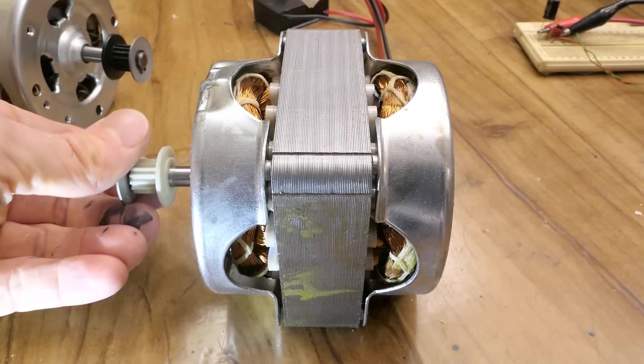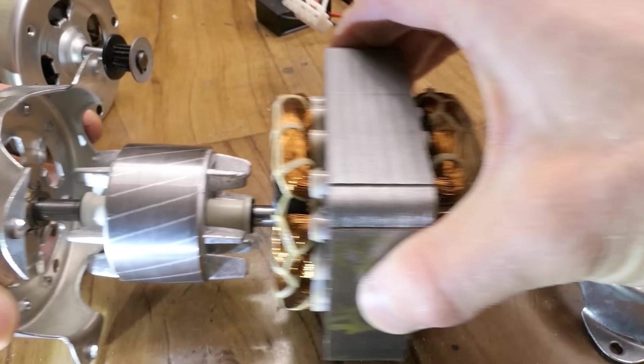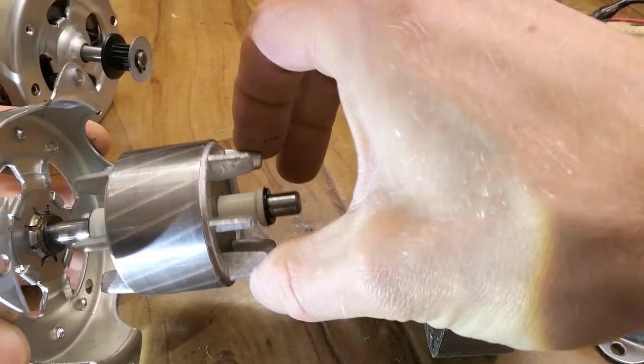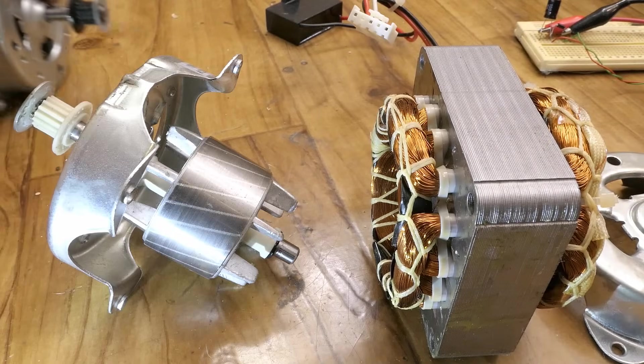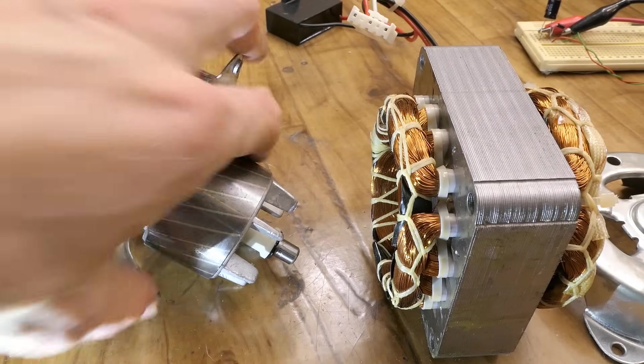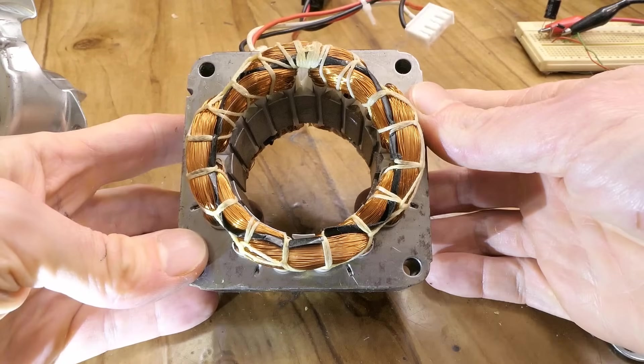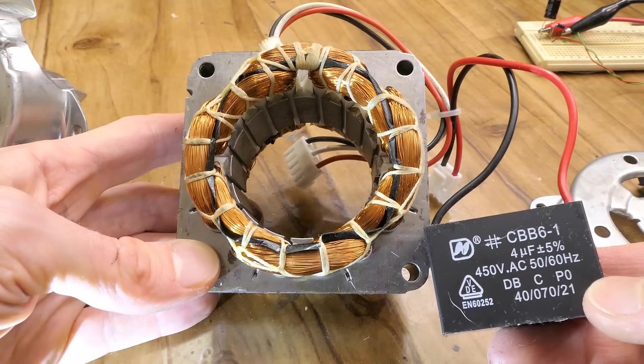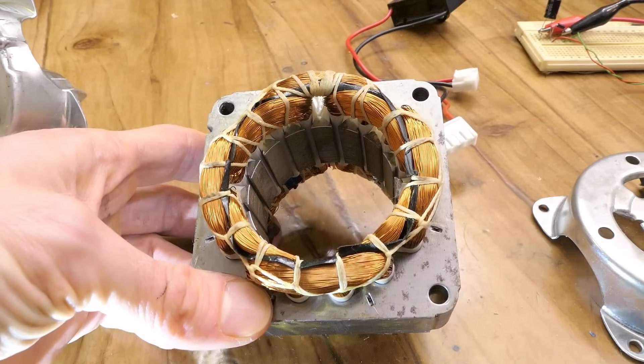I have one more such motor which I already disassembled and here you can see the rotor in it. It's an asynchronous motor so it's using a squirrel cage rotor which looks like this and the windings. It's a single phase motor with run capacitor for it and it seems to have four poles.